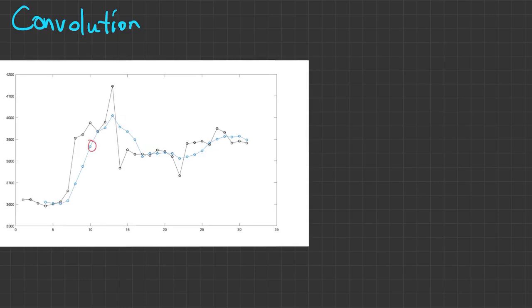So if we wanted to find this blue value, it's the average of the four most recent black values. And that smooths out the curve considerably.